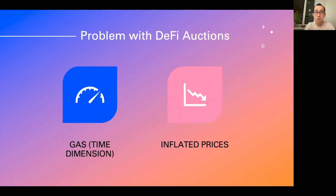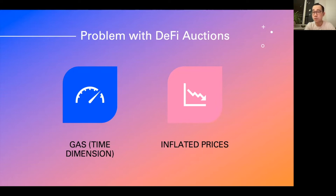The problem with DeFi or crypto auctions in general is that classic Dutch or English style auctions are highly biased towards those with large amounts of capital, because they can manipulate the time dimension and get ahead of regular investors by throwing gas at the problem. People with the highest capital are also more likely to pay a higher price. When regular investors buy a new coin, most of the liquidity is held by whales who bought in from the auction, and when they take profits, they release large amounts into the circulating supply, causing the token price to tank.